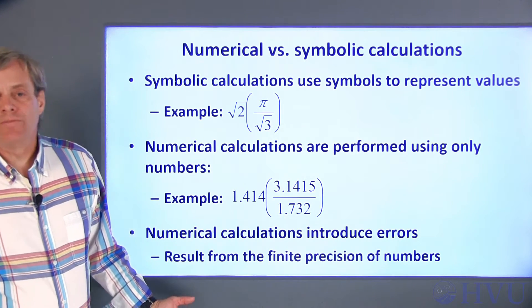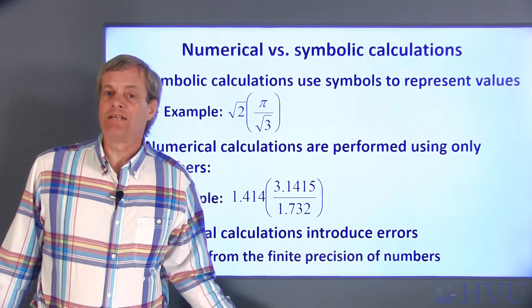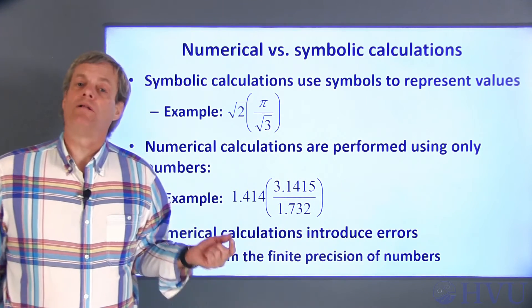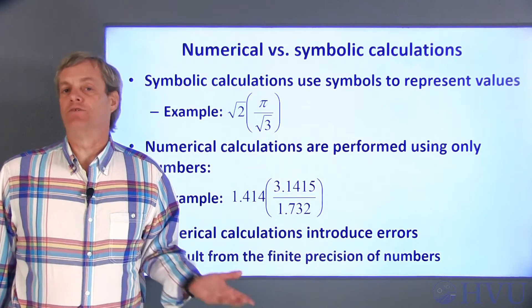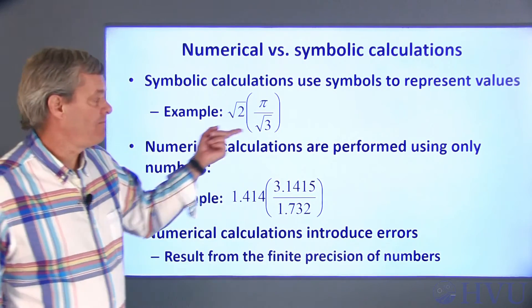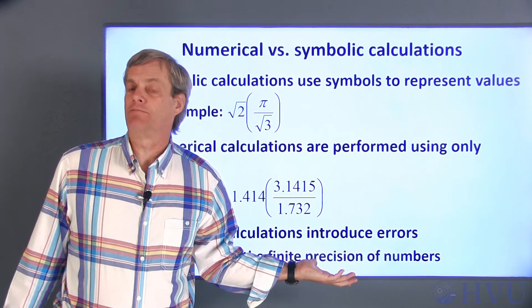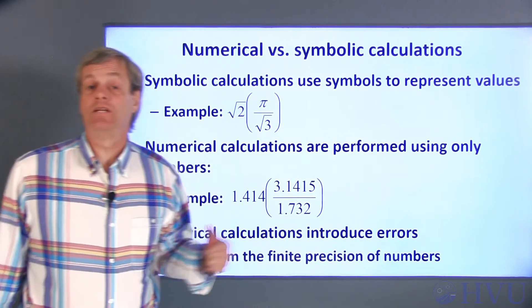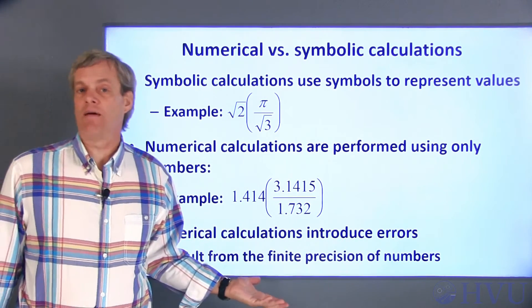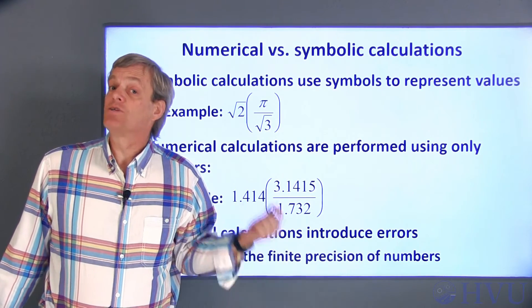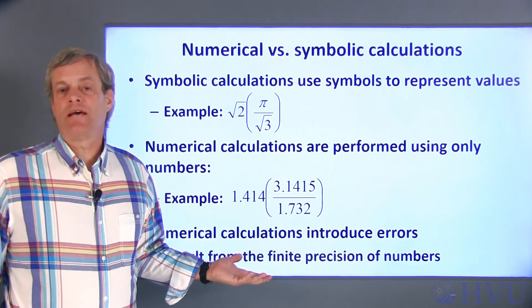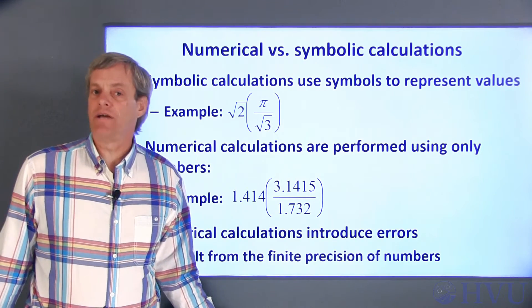So why would we ever use numerical calculations if they're almost guaranteed to be wrong? Well, for one thing, engineers need to deal in numerical values. You can't really give this symbolic expression to a machine shop and ask them to fabricate a plate with this thickness. Machining tolerances guarantee that you can't build anything to an infinite level of precision. So as engineers, our numbers will always have some level of allowable error.